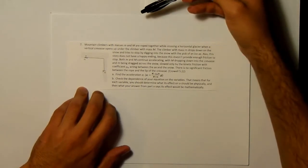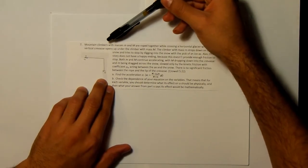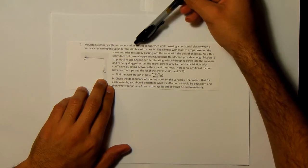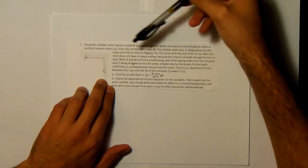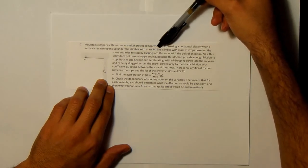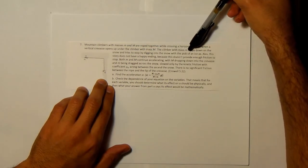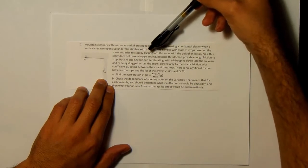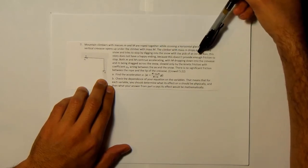I'm going to read you the problem. Number seven: mountain climbers with masses little m and big M are roped together while crossing a horizontal glacier when a vertical crevasse opens up under the climber with mass big M. The climber with mass little m drops down on the snow and tries to stop by digging into the snow with the pick of an ice axe.